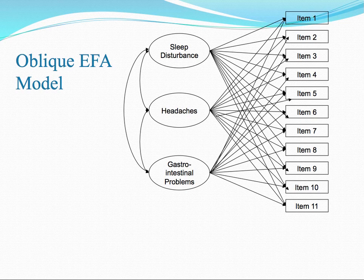If you ran this model, you would have different weightings for each of those 11 items for the particular latent variable. Whereas with confirmatory factor analysis, you specify the particular items that are related to each latent variable—so sleep disturbance may have the first four items but not the remaining seven.